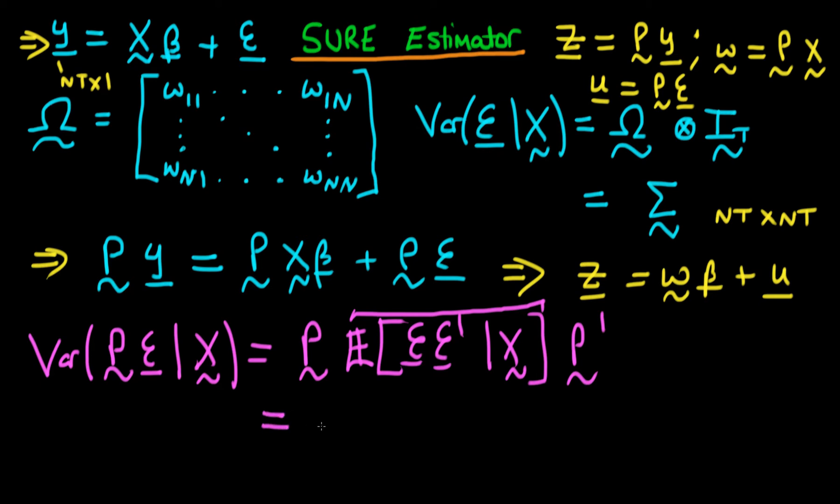So this is just going to be P times the variance of epsilon, given X, which is just this matrix, which I've defined over here as capital sigma. So this is just P times capital sigma times the transpose of P.